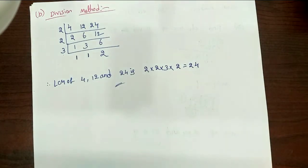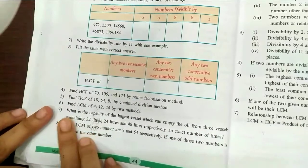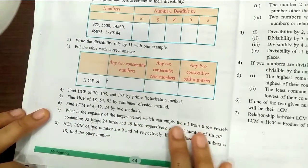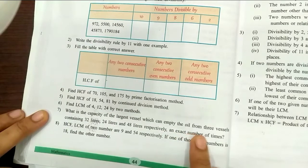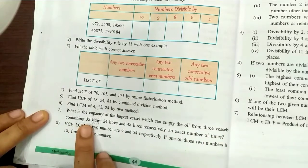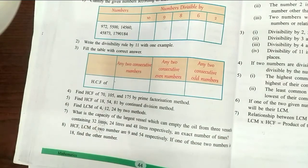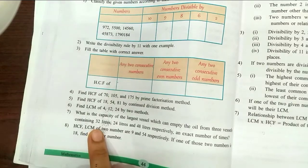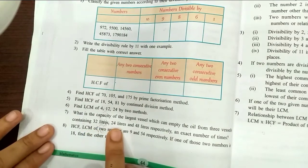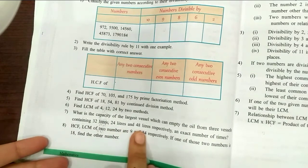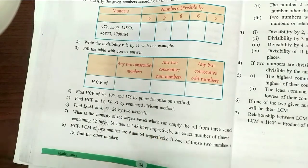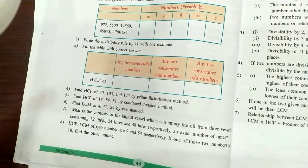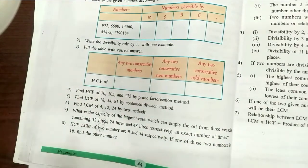Next, seventh problem. What is the capacity of the largest vessel which can empty the oil from 3 vessels containing — 1st vessel has 32 liters of oil, 2nd one is 24 liters, 3rd one is 48 liters — an exact number of times? You are going to measure the oils of 3 vessels.